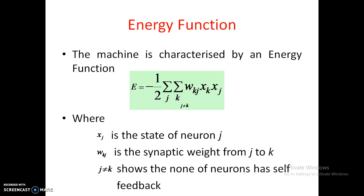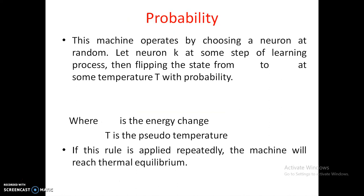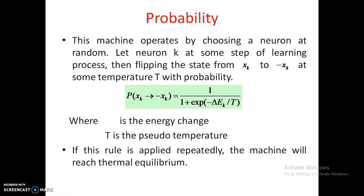Probability comes into picture because this machine operates by choosing a neuron at a random value. Let k be some step of a learning process; the state is then flipped from x_k to minus x_k — that is, from on state to off state. The probability of this flip is given by a formula involving temperature.